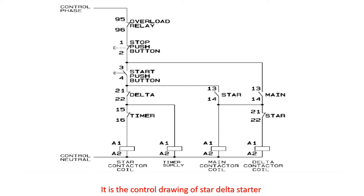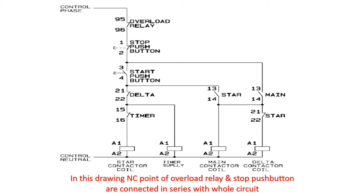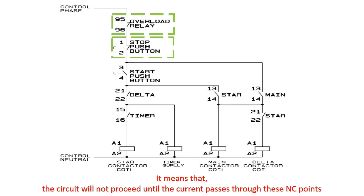It is the control drawing of a star delta starter. In this drawing, the NC point of the overload relay and stop push button are connected in series with the whole circuit. This means that the circuit will not proceed until the current passes through these NC points.